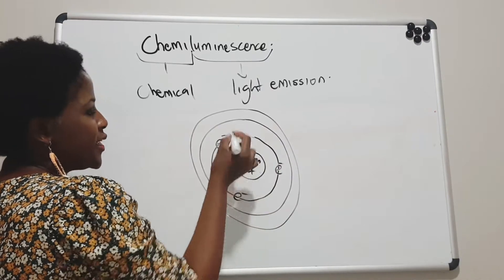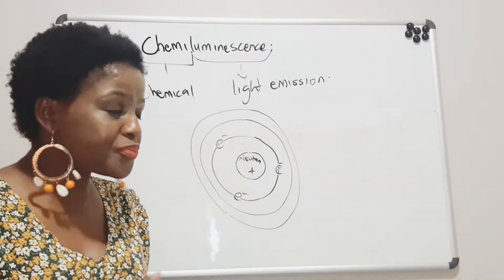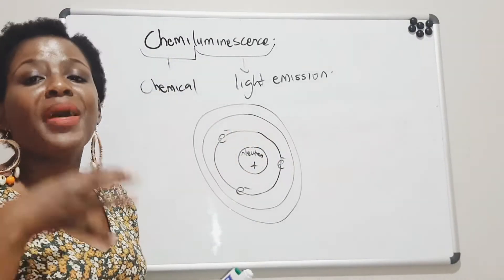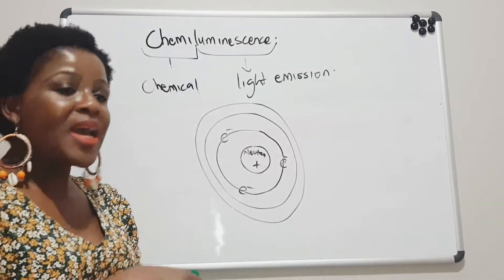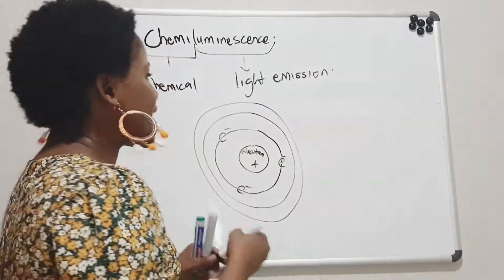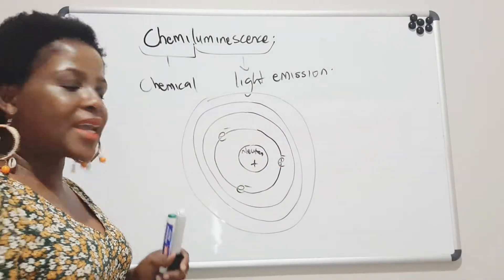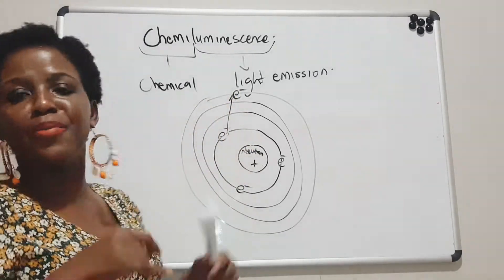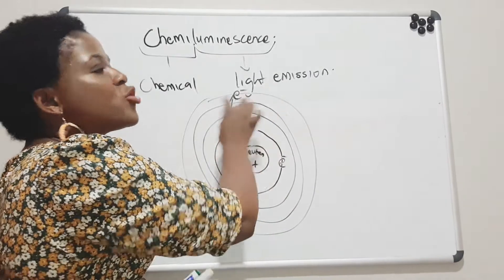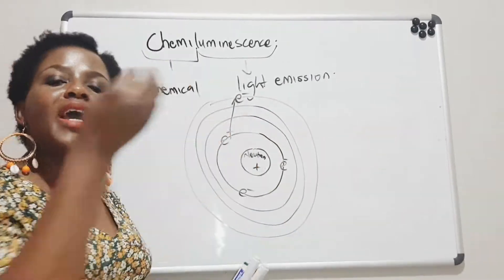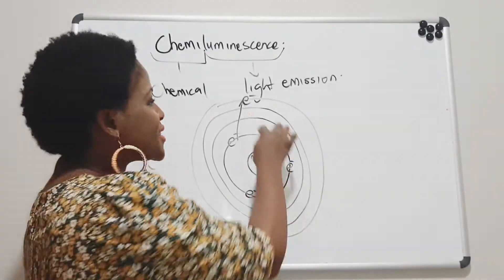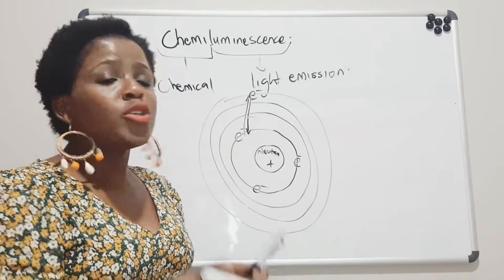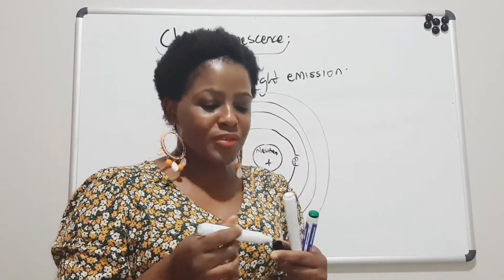What happens is that during this process in the machine, the substrate is catalyzed by an enzyme. Once the substrate is catalyzed, the electrons get excited — that is why we say they are chemically excited. As they get excited, they move into a higher energy level, but because it is not stable up there, at some point they have to come down to their original electronic ground state.